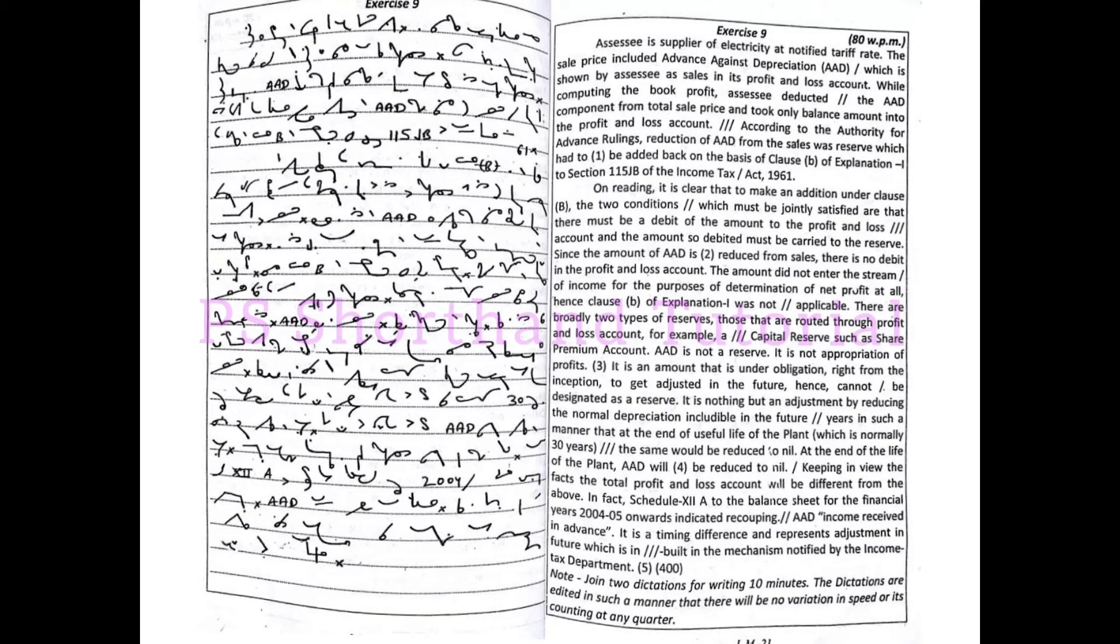AAD, income received in advance. It is a timing difference and represents adjustment in future which is in-built in the mechanism and notified by the Income Tax Department.